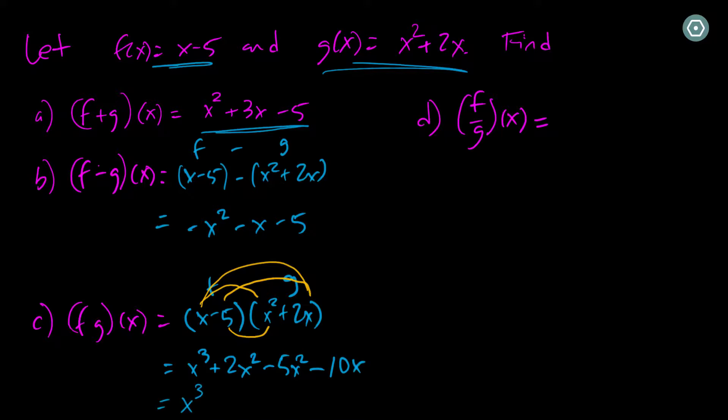So now when I just simplify this a little bit, I have x cubed minus 3x squared. I have a 2x squared and a negative 5x squared. This is minus 3x squared minus 10x. There's my f times g function.